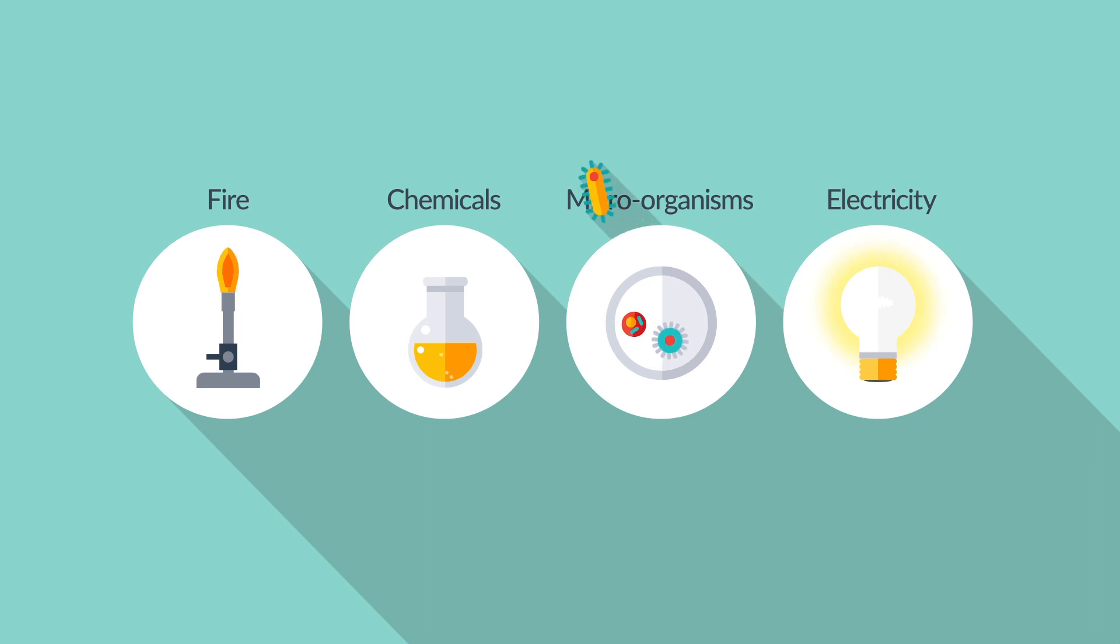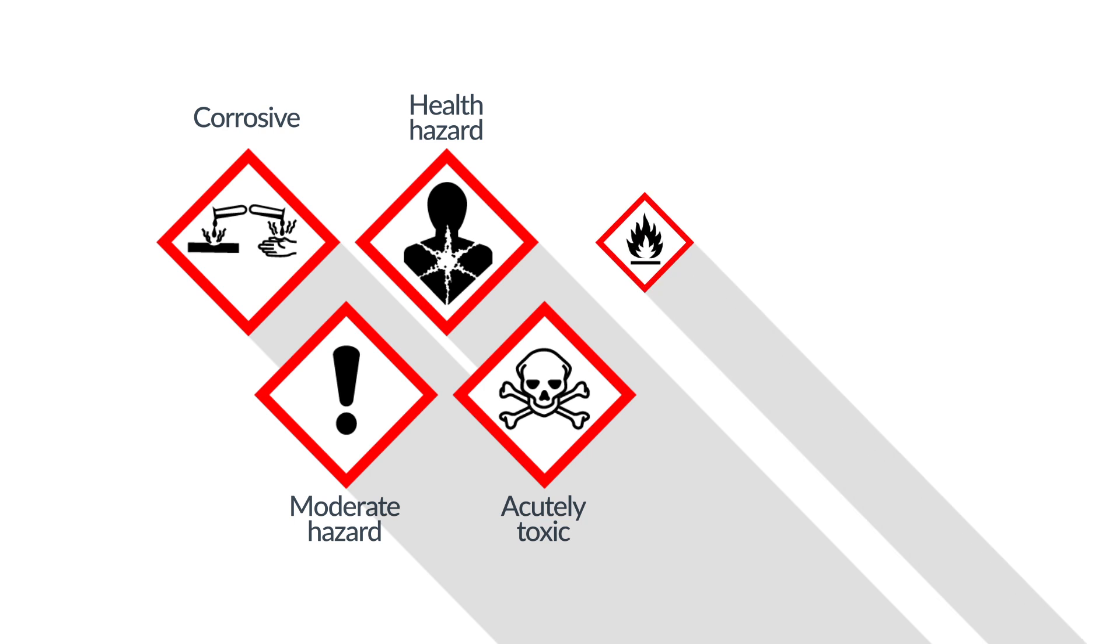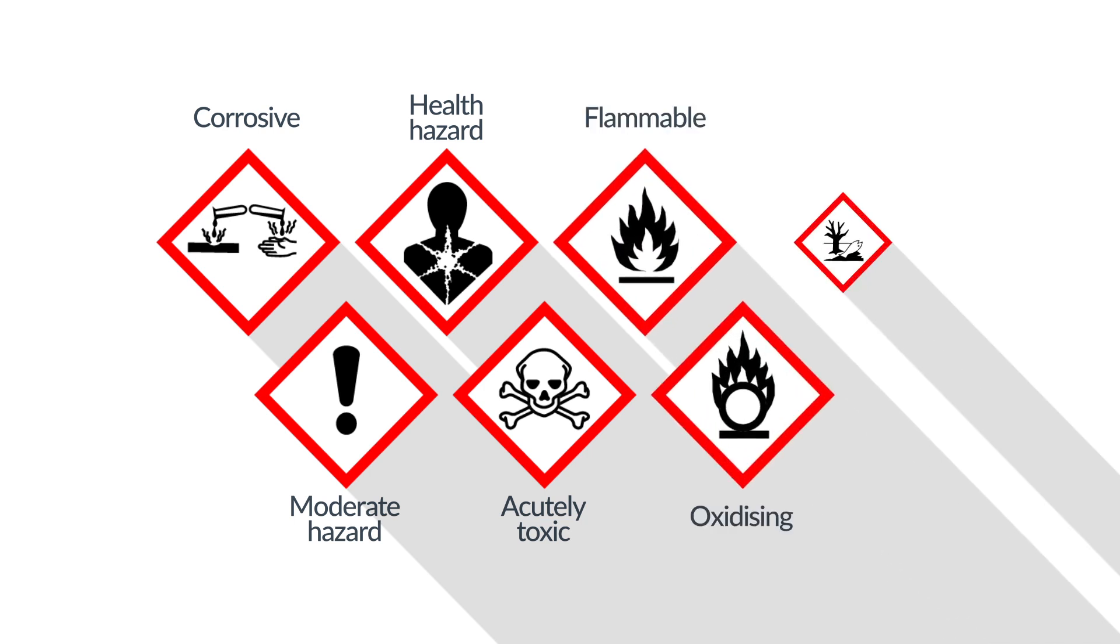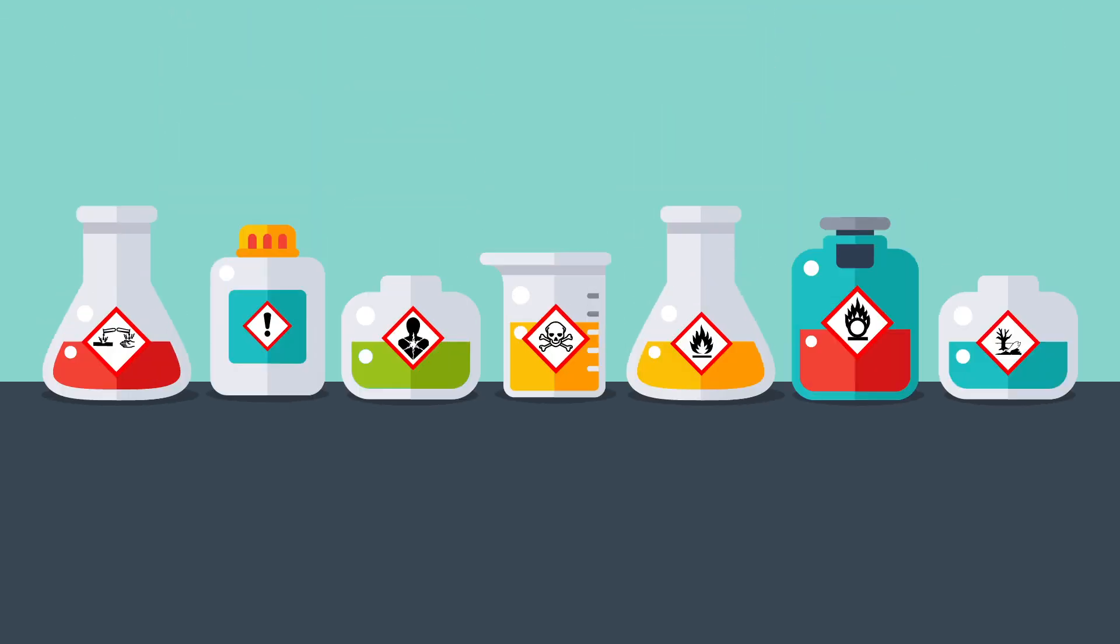Hazards are identified using internationally recognised symbols. Some examples include corrosive, moderate hazard, health hazard, acutely toxic, flammable, oxidising and hazardous to the aquatic environment. These will help you when identifying the risks for your risk assessment.